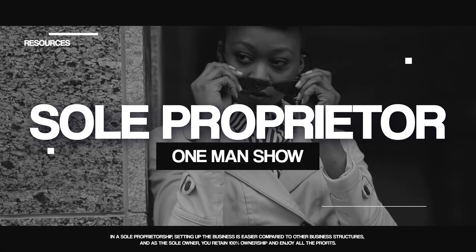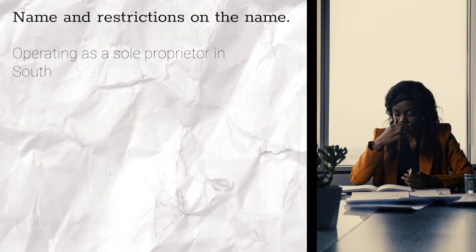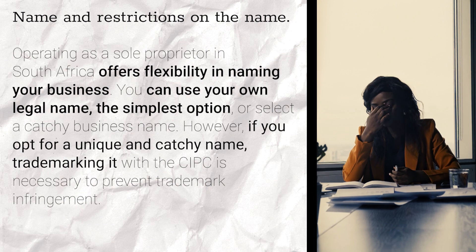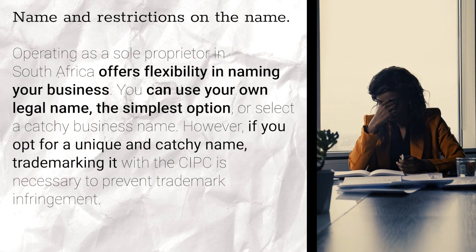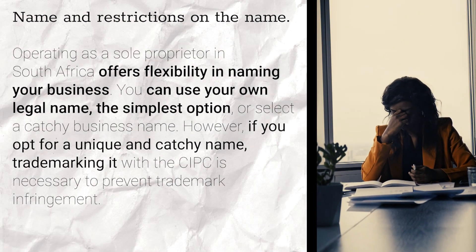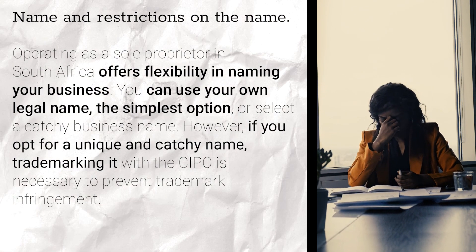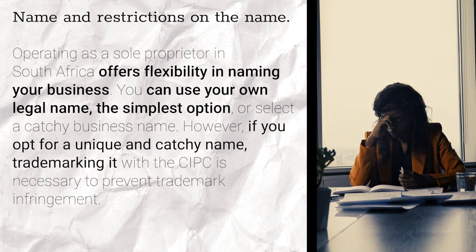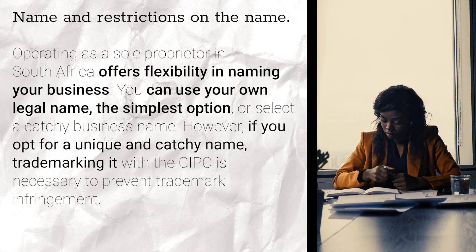What does it mean to operate as a sole proprietor in South Africa? When it comes to naming your business, you have two options. You can use your own legal name, which is the simplest approach, or opt for a catchy business name. However, if you choose the latter, you'll need to trademark it with the CIPC to avoid infringing on existing trademarks.